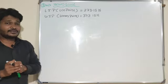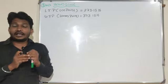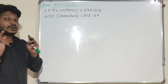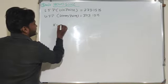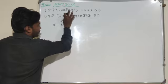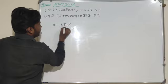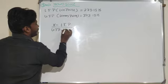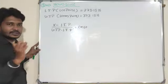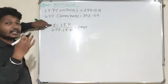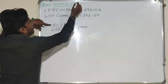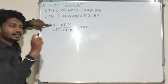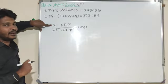Now applying the generalized formula to the Kelvin scale: K minus 273.15, divided by 373.15 minus 273.15, equals constant. We can convert any temperature represented as X into Kelvin using this approach.